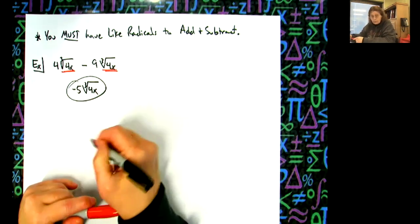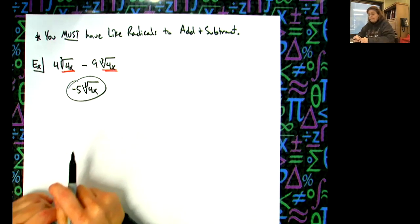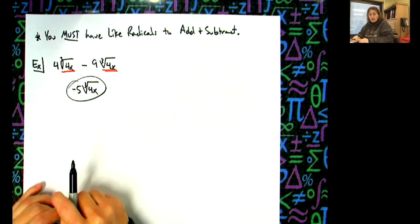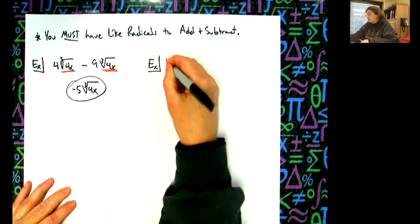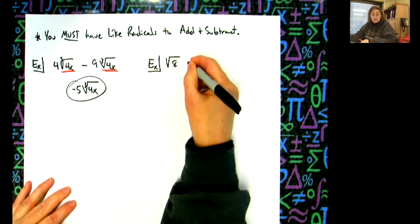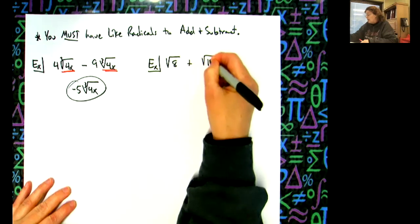Now let's suppose they're not like radicals, because they're not all going to match. Let's do this one as a square root: √8 + √18.